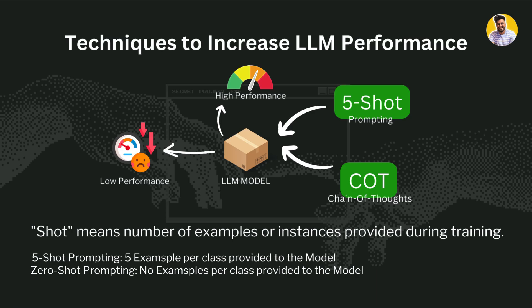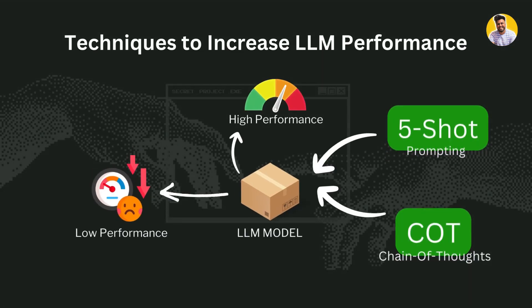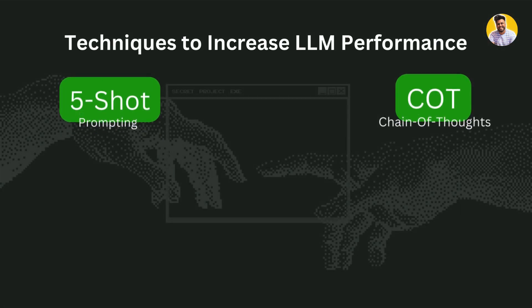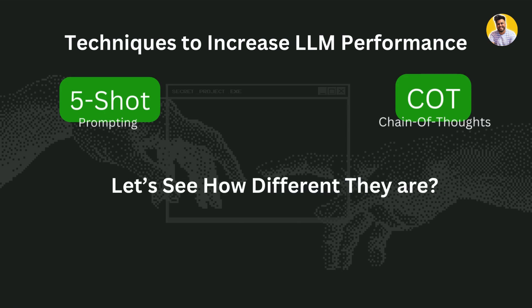Both 5-shot prompting and chain of thought prompting are techniques used to improve the performance of large language models on specific tasks, but they tackle the problems in a very different way. So let's see how these two techniques are different from each other.